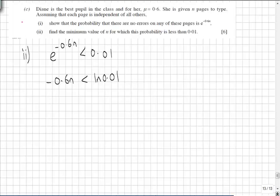Solving out, we'd have n has to be greater than the natural log of 0.01 over -0.6, giving n greater than 7.67. Obviously, we can't have 7.67 of a page, so the minimum value of n has to equal 8.